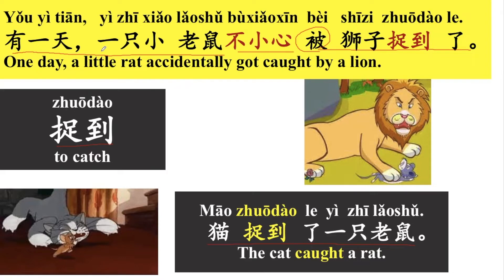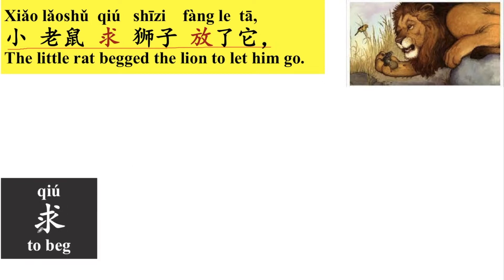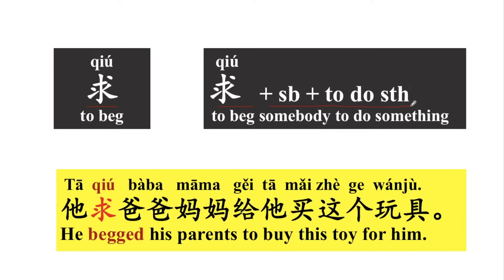小老鼠求狮子放了它。求 means to beg — 求 somebody to do something. For example: 他求爸爸妈妈给他买这个玩具 — He begged his parents to buy him this toy. 给他 means 'for him,' 买 means to buy, 玩具 means toy.